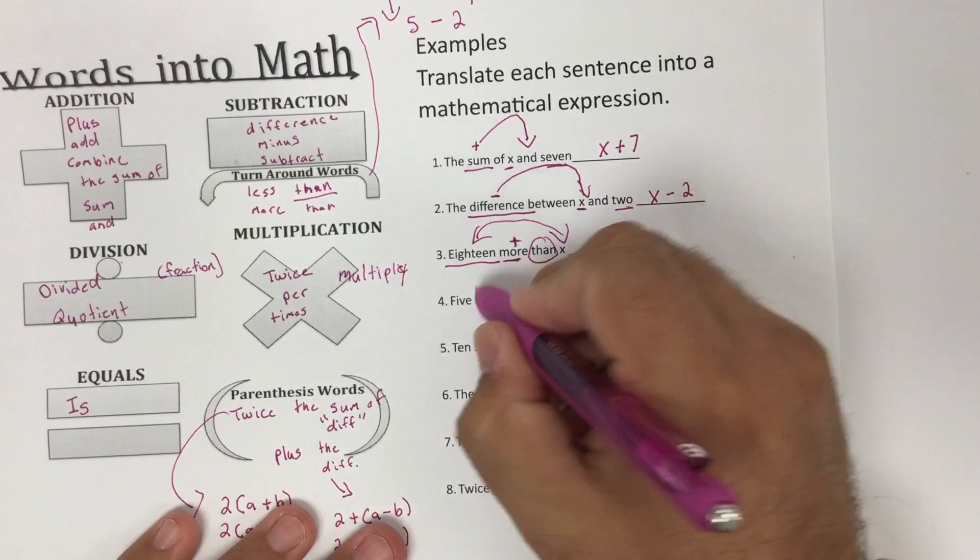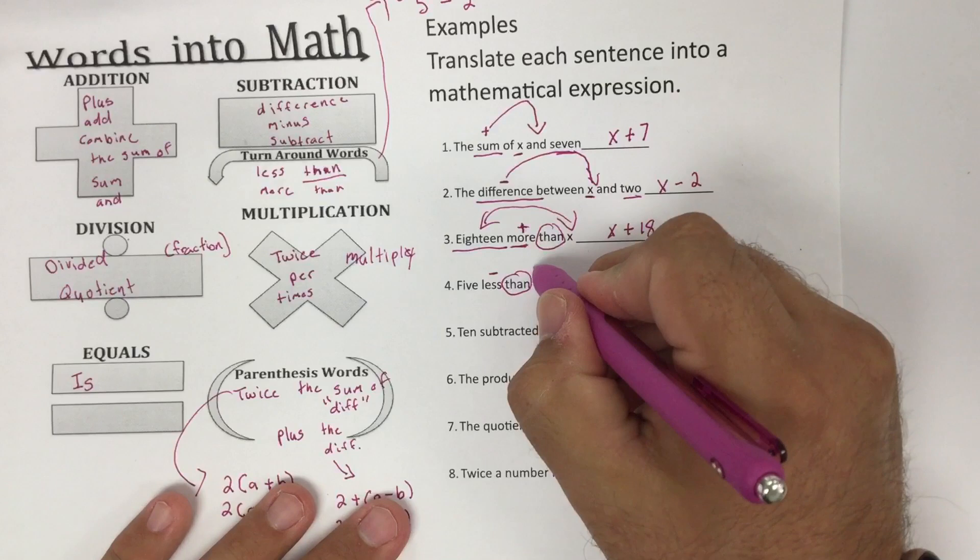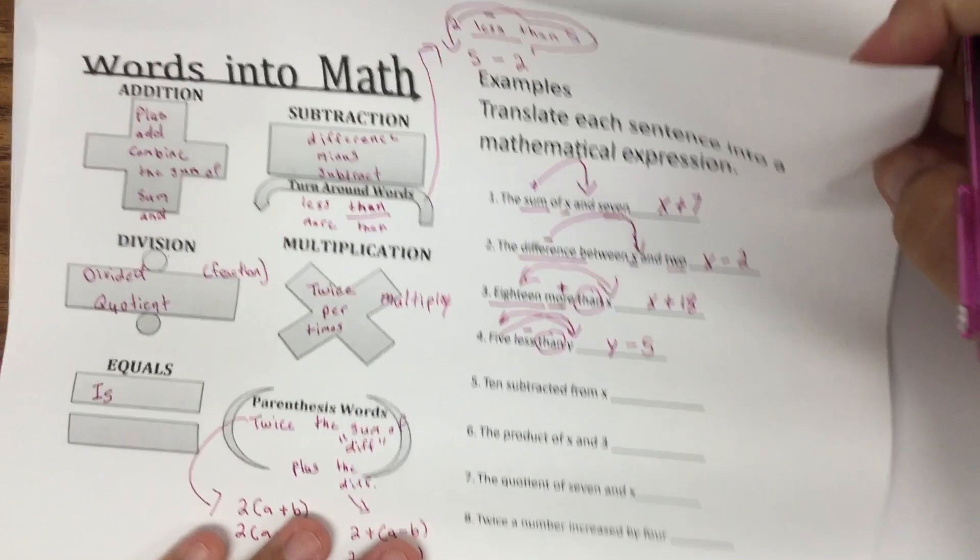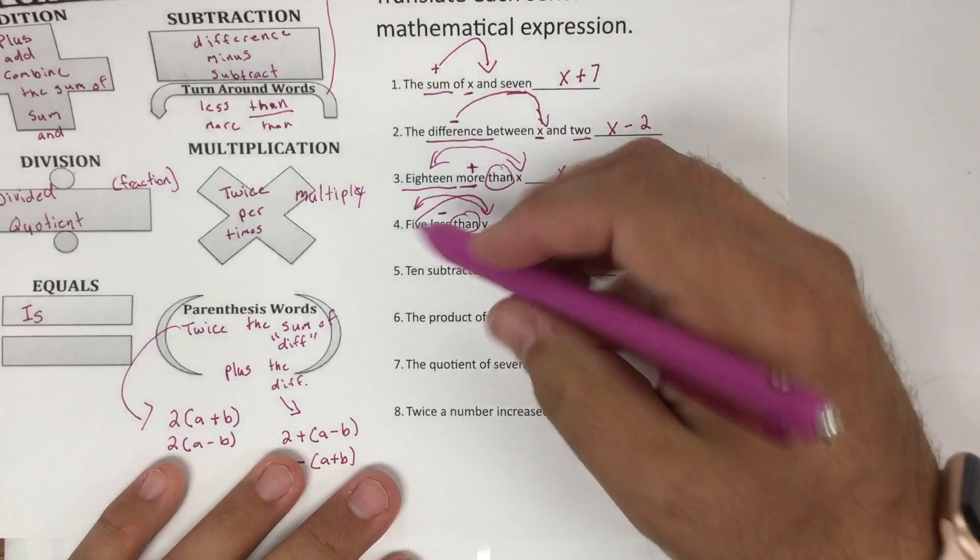Like this next problem: five less than Y. Less means to subtract, but of course I have that than. This is what we call that flip word. So the Y is going to go to the front and the five is going to go to the back. That gives me Y minus five. Big keyword there: turn flip word. Make sure you look at that very closely.